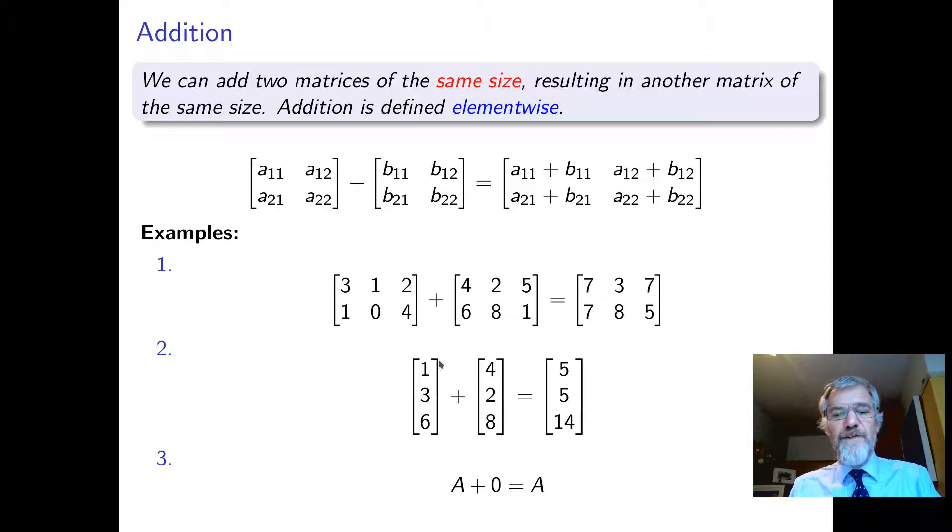We can also add column vectors, and it just follows the familiar pattern for adding vectors. If we add the zero matrix of the correct shape, the same shape as A, then we just get A because we just added zero.